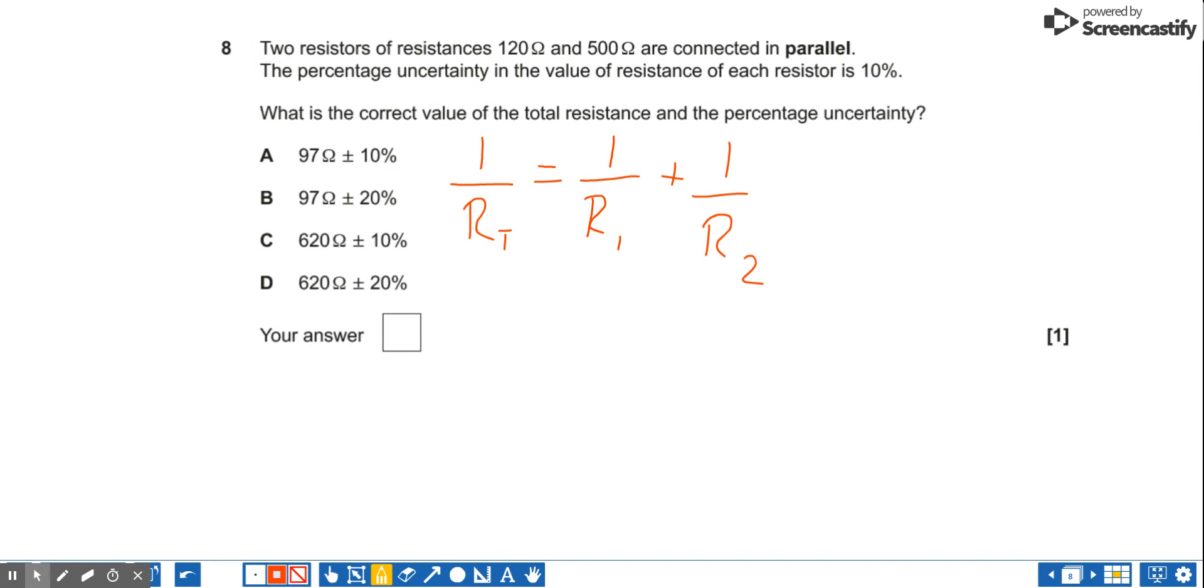If we substitute our numbers in, we've got 1 over 120 plus 1 over 500. And that would mean that my total resistance is going to equal 120 times 500 divided by 620.